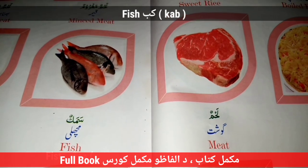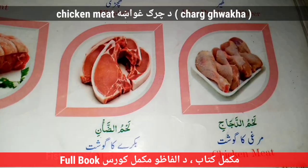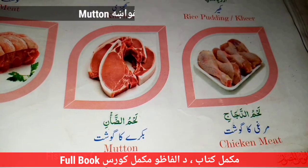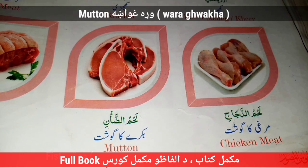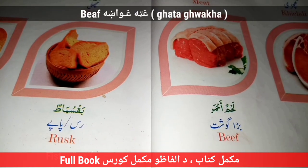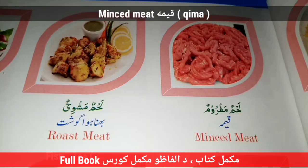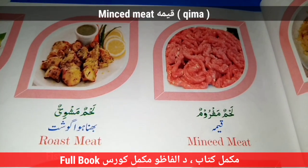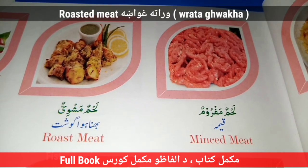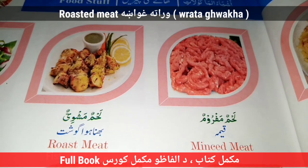Fish — Cub. Chicken. Chicken Meat — The Churg Guaha. Mutton — Wala Guaha. Beef — Gata Guaha. Rusk. Minced Meat — Kema.